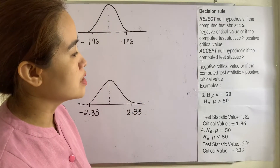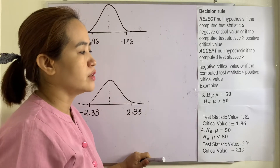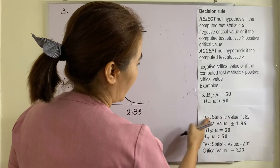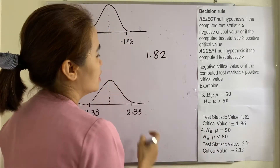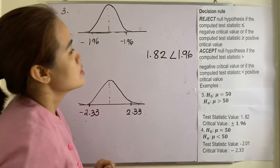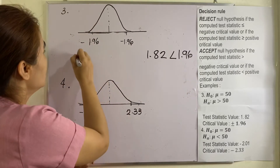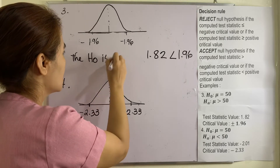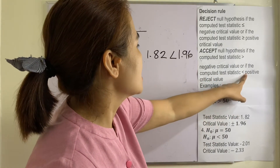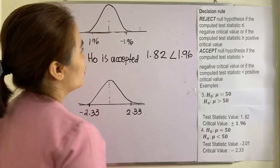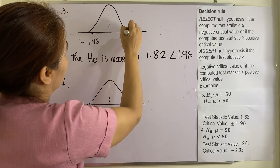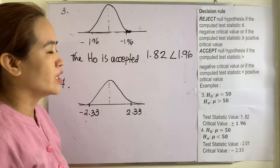Example 3: The null hypothesis is that the mean equals 50, and the alternative is that the mean is greater than 50. This is a one-tailed test. The test statistic is 1.82. Comparing 1.82 to the critical value of 1.96: since 1.82 is less than the positive critical value, the null hypothesis is accepted. The rejection region is the area to the right of 1.96.